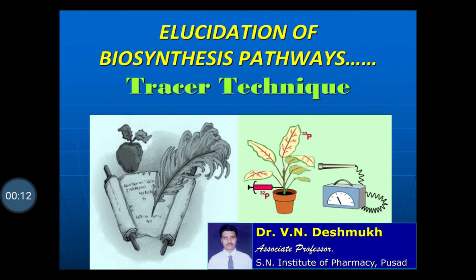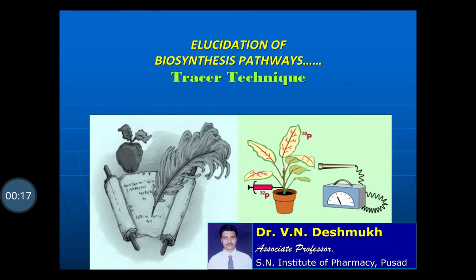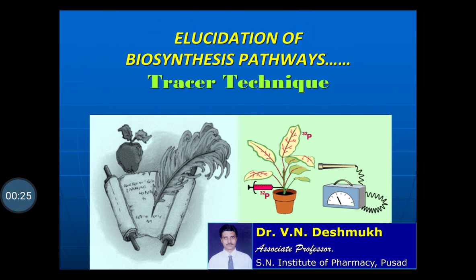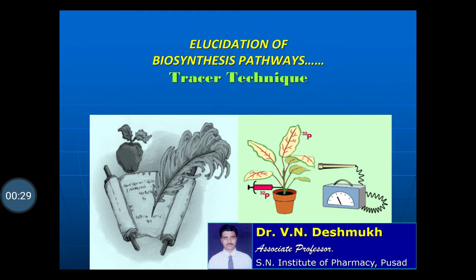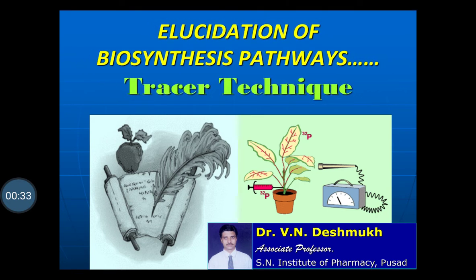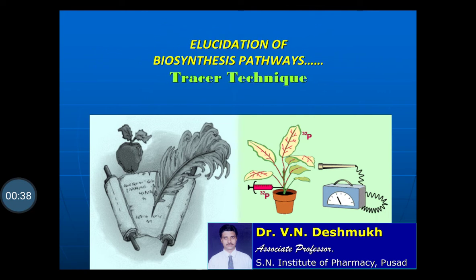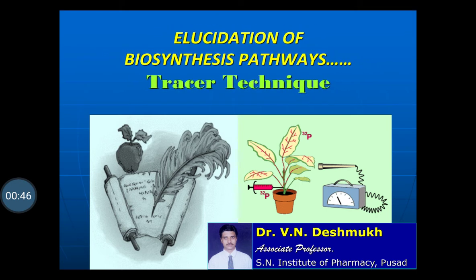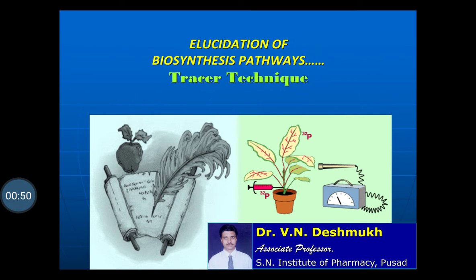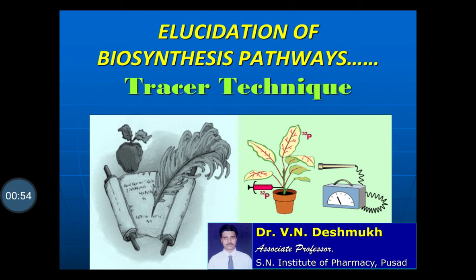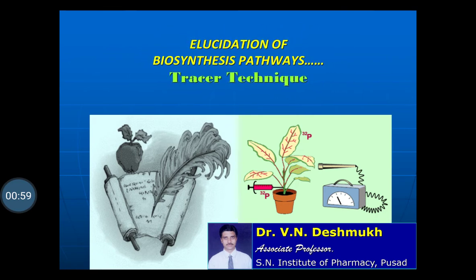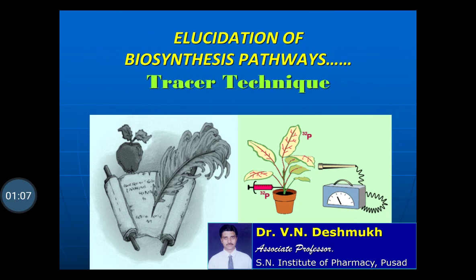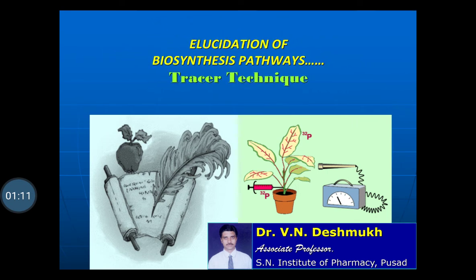Friends, today we will learn about elucidation of biosynthetic pathway. We will study the tracer technique. In case of the elucidation of the biosynthetic pathway, the biogenetic hypothesis is converted to biosynthetic demonstration — that is, one can know which is the precursor used for the biosynthesis of the particular secondary metabolites, whether it may be an alkaloid, glycosides, volatile oil, or tannin.